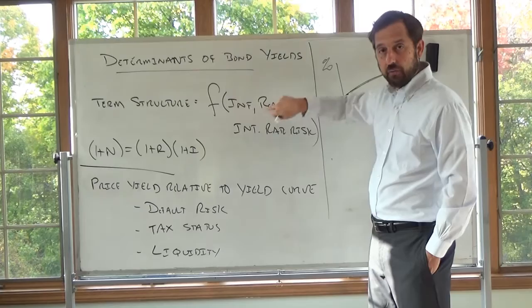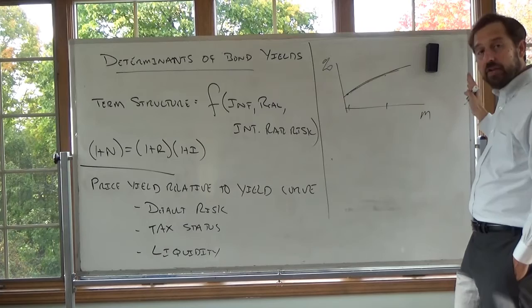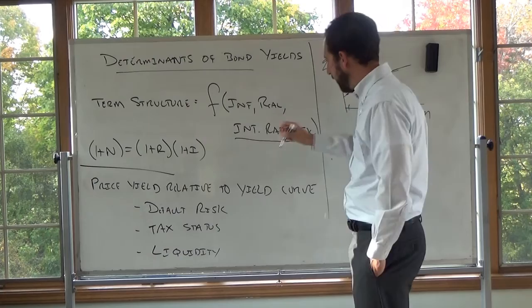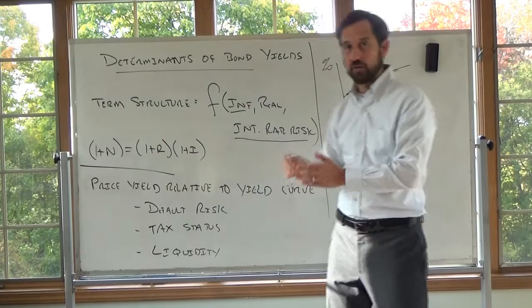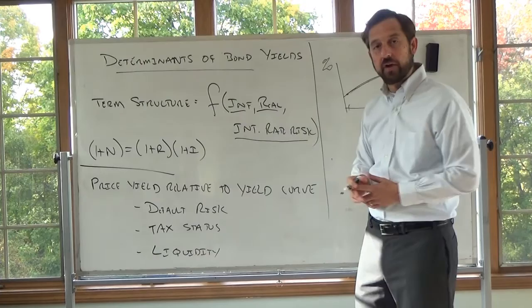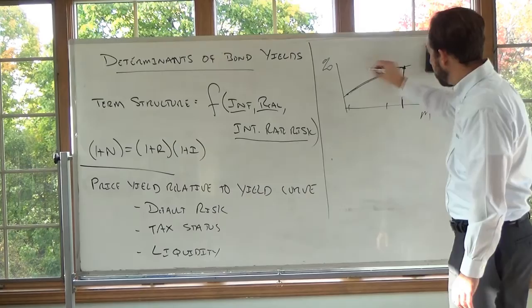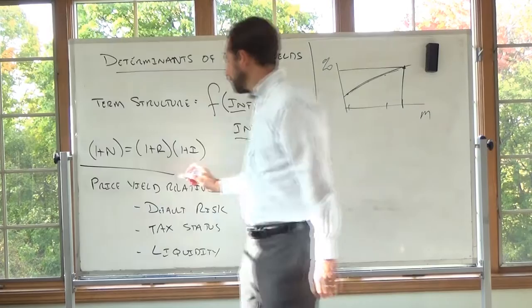The term structure of interest rates is a function of inflation, the real rate, and the amount of interest rate risk in a particular bond. The farther we go out, the more interest rate risk. So for a particular point on the term structure — say a two-year bond — what determines the rate is inflation expectations over the next two years, expectations of the real rate over the next two years, and the amount of interest rate risk in a two-year note.